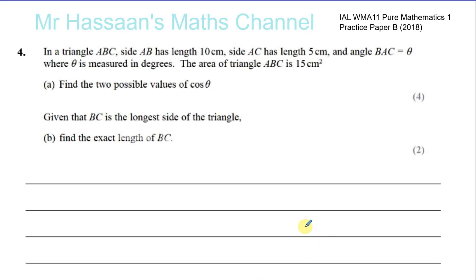Now for question number four from the practice paper B of Pure Mathematics 1 International A Level. This is a practice paper put together to give more practice for this type of question where there are not many past papers available. We have triangle ABC where side AB has a length of 10 centimetres, side AC has a length of 5 centimetres, the angle BAC equals theta measured in degrees, and the area of the triangle is 15 square centimetres.